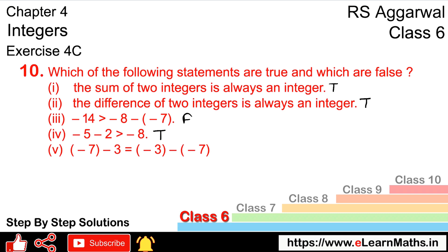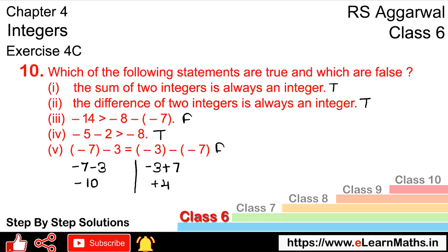Let's do the last part. The last part is: is minus 7 minus 3 equal to minus 3 minus minus 7? Let's check both sides. Left side: minus 7 minus 3 equals minus 10. Right side: minus 3 minus minus 7 equals minus 3 plus 7 equals 4. The two sides are not equal. Hence, this statement is false.